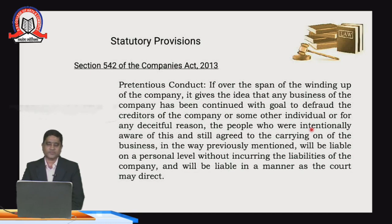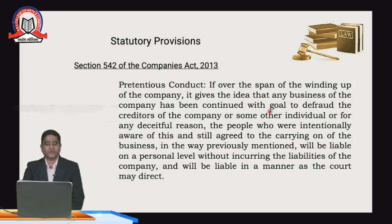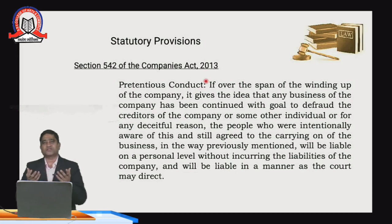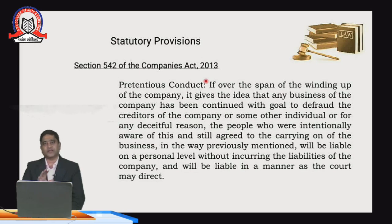Coming to Section 542 of the Companies Act: this deals with fraudulent conduct over a span of up to 10 years during the winding-up process. It addresses situations where the business of the company has been continued with the intent to defraud creditors. During winding up, the company must inform all shareholders and the public, and should not start a separate business during the winding-up process.